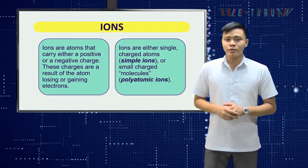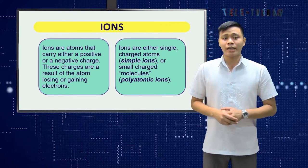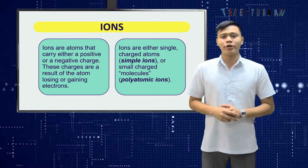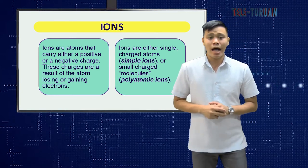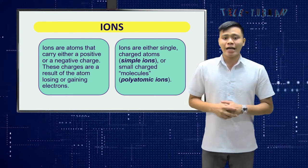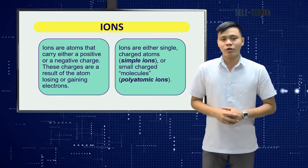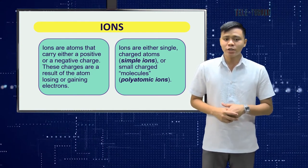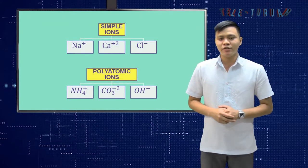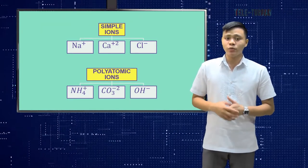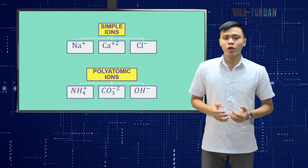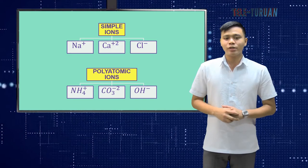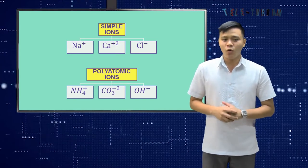Ions are atoms that carry either a positive or a negative charge. These charges are a result of the atom losing or gaining electrons. Ions are either single charged atoms, called simple ions, or small charged molecules, called polyatomic ions. Examples of simple ions are Na⁺, Ca²⁺, and Cl⁻. Examples of polyatomic ions are NH₄⁺, CO₃²⁻, and OH⁻.